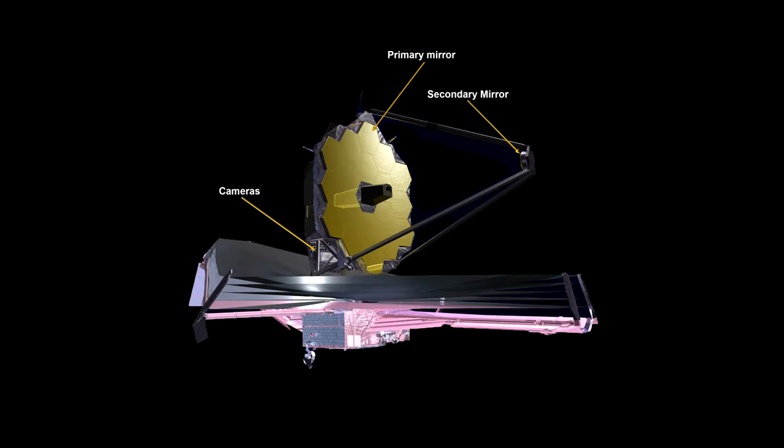Other key components include the cameras, the sunshield, the solar panels, communications antennae, the computer, and spacecraft control.